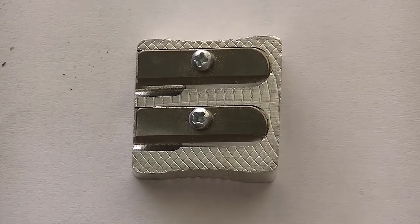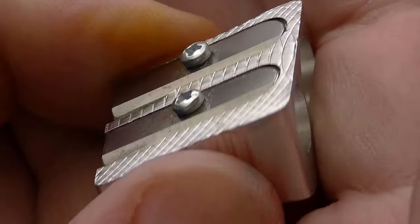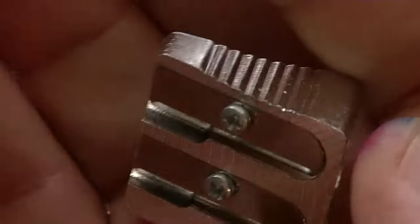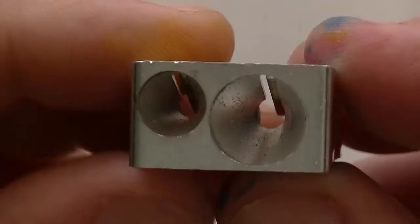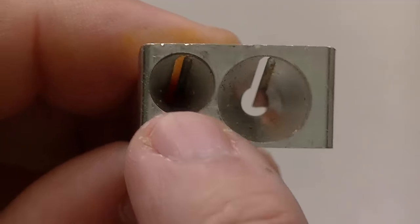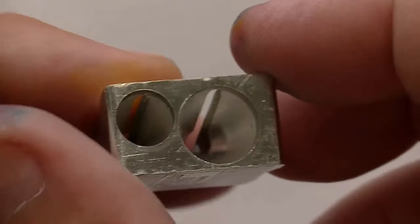Let's take a close look at this pencil sharpener here. As you can see it's got a metal body, likely a magnesium type body. It's very light, it has these two blades, and you can see that it has a small hole and a larger hole.